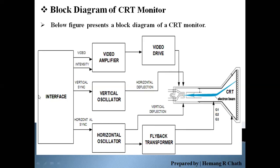Looking at the block diagram of the CRT monitor: the interface — meaning the cable — connects the monitor. After that there is a video amplifier to amplify the video signal, a video driver for video information, then a vertical oscillator and horizontal oscillator. Inside, the vertical oscillator controls the vertical deflection coil, and the horizontal oscillator controls the horizontal deflection coil to transfer the electronic beam.